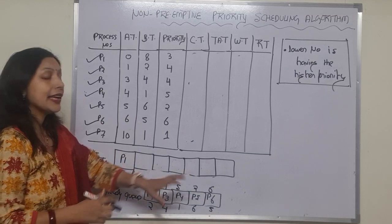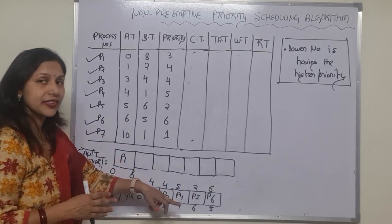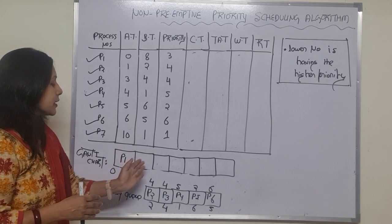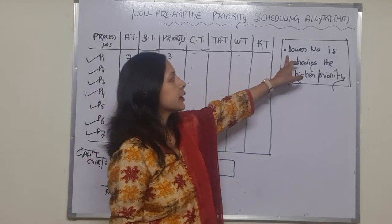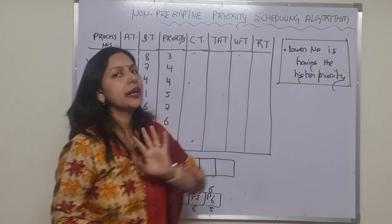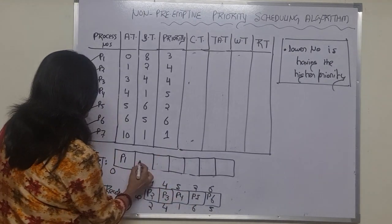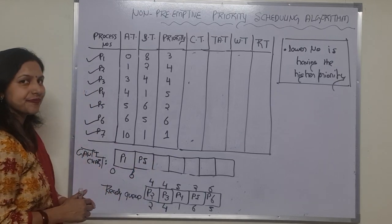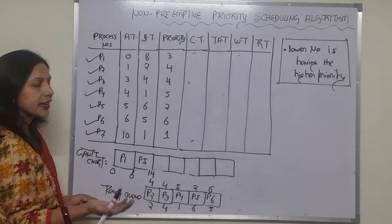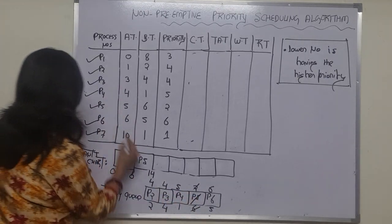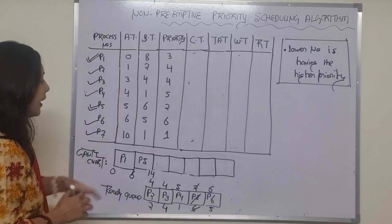Now we check which process has the highest priority out of these five. Since the lower number means higher priority, process number P5 has the lowest priority number — that is 2. So P5 is selected and comes into the running queue. The burst time of P5 is 6, so it runs from 8 to 14. P5 has been completely executed, and P1 was already executed.